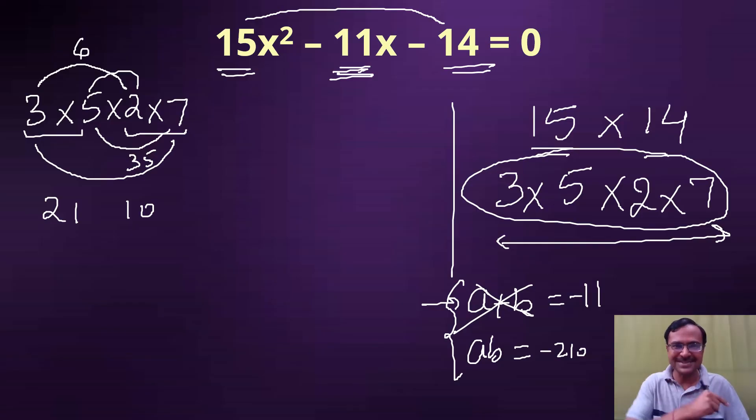And now all you need to do is to put the negative sign or the positive sign according to what is the middle term. It is minus 11, so how are you going to get minus 11 from 21 and 10? It has to be minus 21 plus 10. And there you go, you have split the middle term without actually finding the product of a and c.